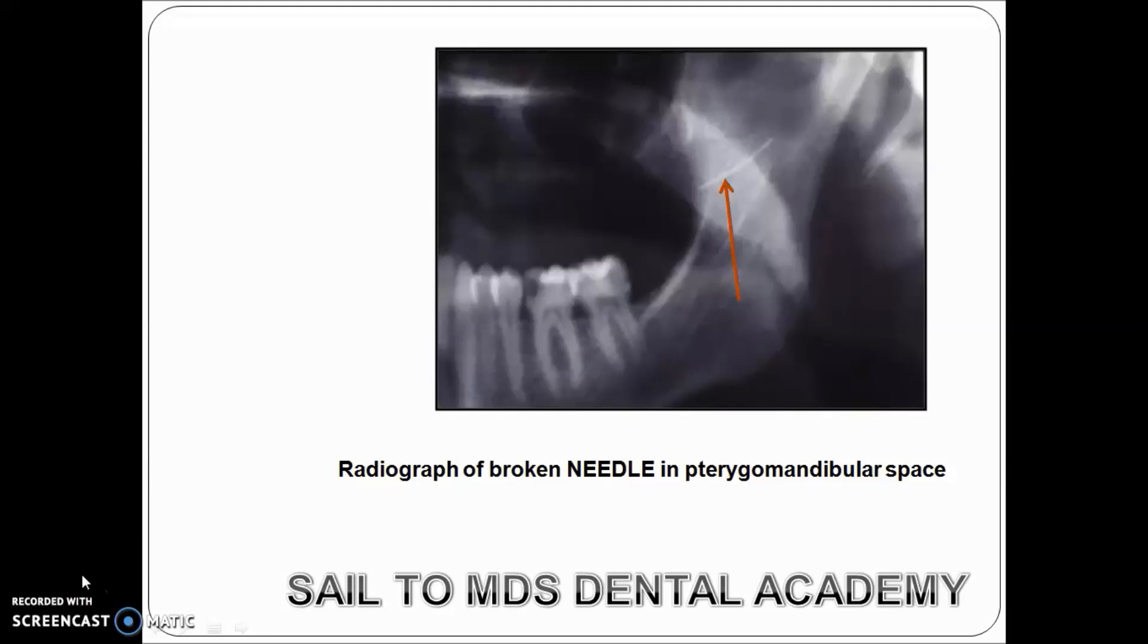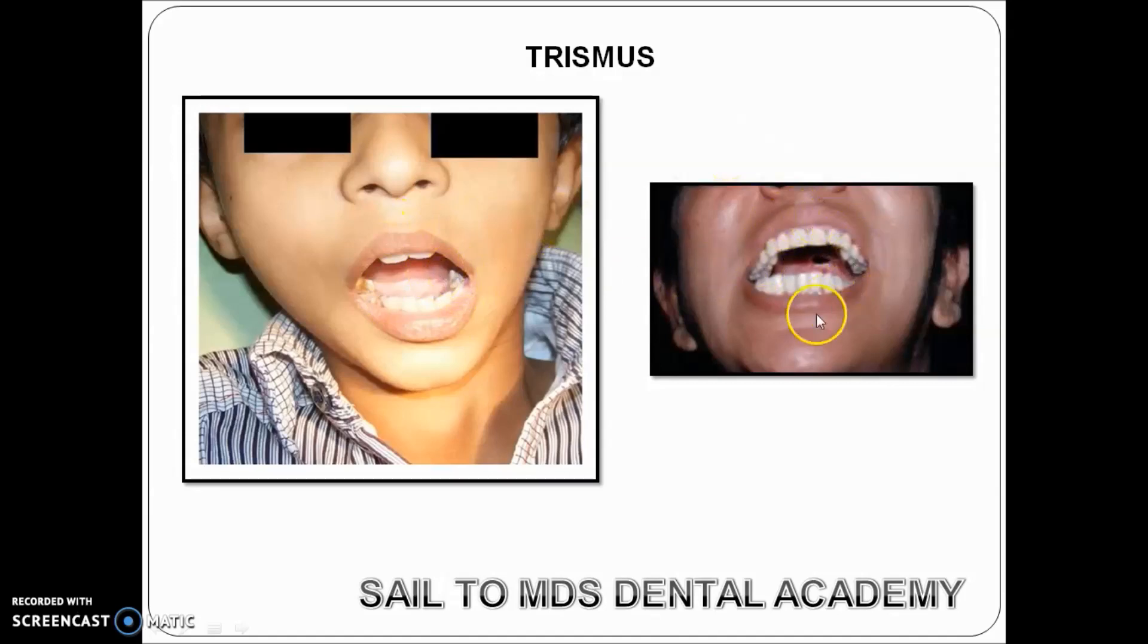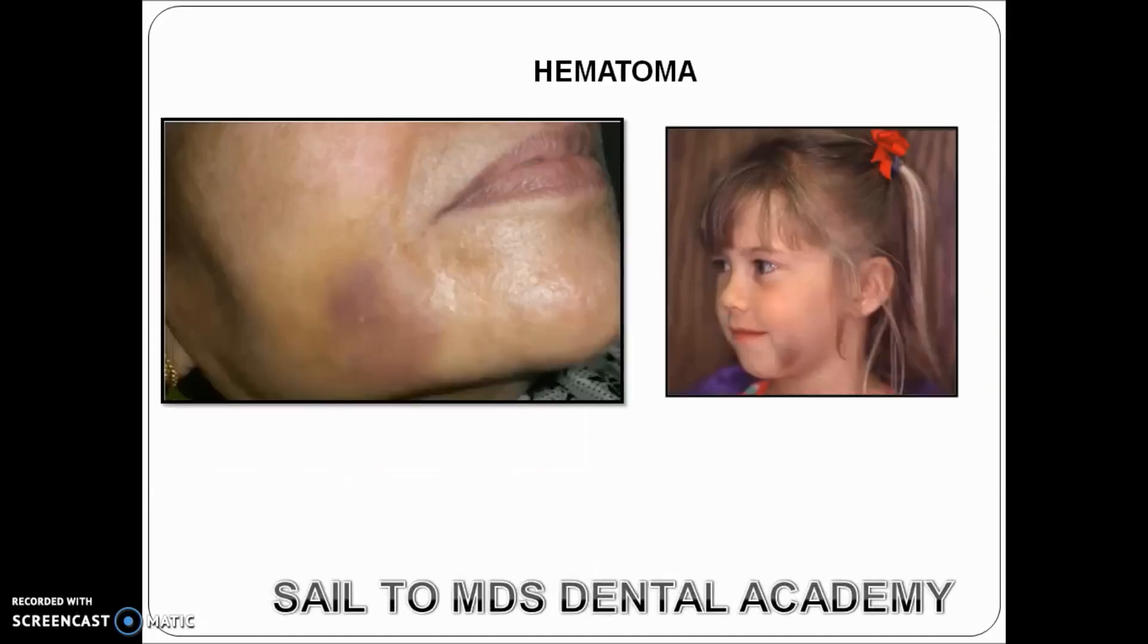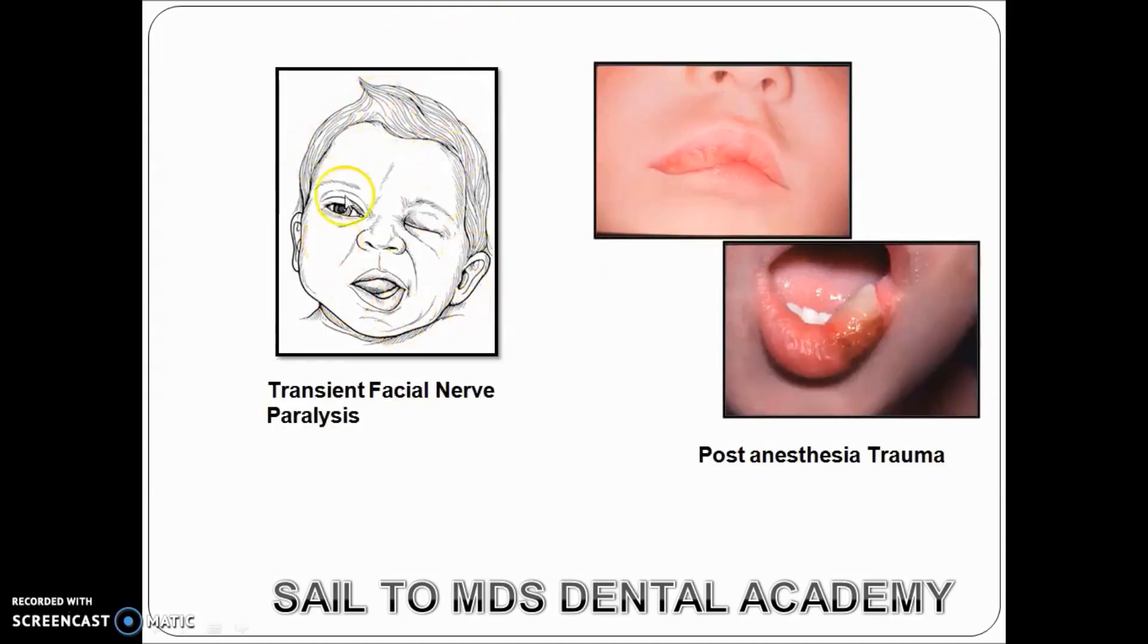Before we study local anesthesia complications, let's see certain features of such complications. You can see the radiograph of a broken needle in the pterygomandibular space - this arrow indicates the needle. Second is trismus, the classical picture of locked jaw, mostly associated with inferior alveolar nerve block. This hematoma is due to mental or incisive nerve block. Remember, PSA is most commonly associated with hematoma, followed by inferior nerve block, and third is mental or incisive nerve block. This is transient facial nerve paralysis seen when you injure the facial nerve, and these are post-anesthesia trauma commonly seen in children when they accidentally bite their lip.